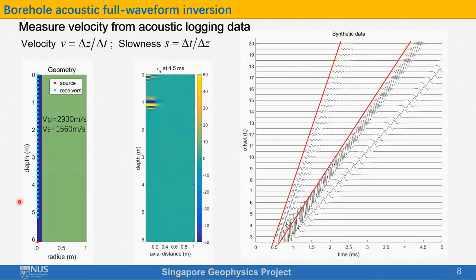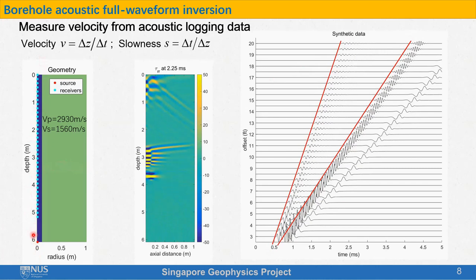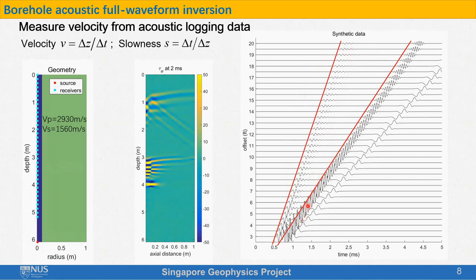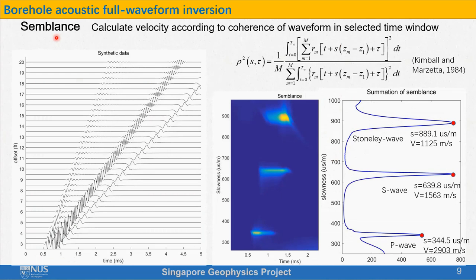The velocities or slowness in the formation could be obtained by measuring the slope of the first arrived travel time. During the work, the tool is moving from the bottom to the top in the well, and there will be thousands of measurements at different depths. So we cannot deal with so many data by drawing the lines manually. We need to find automatic ways to measure the slope of the travel time curves. The standard method to automatically deal with acoustic logging data is called semblance. Semblance calculates velocity according to coherence of waveform in a selected time window.